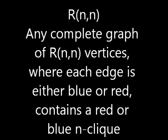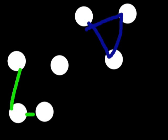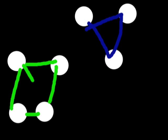What we mean by this diagonal Ramsey number is that any complete graph of r(n,n) vertices where each edge is either blue or red contains a red or blue n-clique. An n-clique is just n vertices that are all pairwise connected. So here's a 3-clique, just 3 vertices that are all connected. And here's a 4-clique — a 4-clique is not a square, because the two on the diagonals aren't connected. This is a 4-clique.